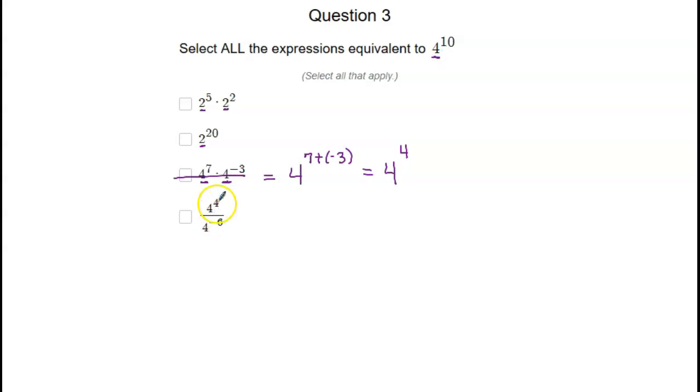If we have 4 to the 4th over 4 to the negative 6th, remember that's the same thing as subtracting those two exponents or you can think about moving this one because it's a negative exponent. Moving it up, this would be 4 to the 4th minus a negative 6th. And when you have minus a negative, this becomes positive. So, 4 to the 4 plus 6th is 4 to the 10th. So, this one would be an appropriate equivalent expression.